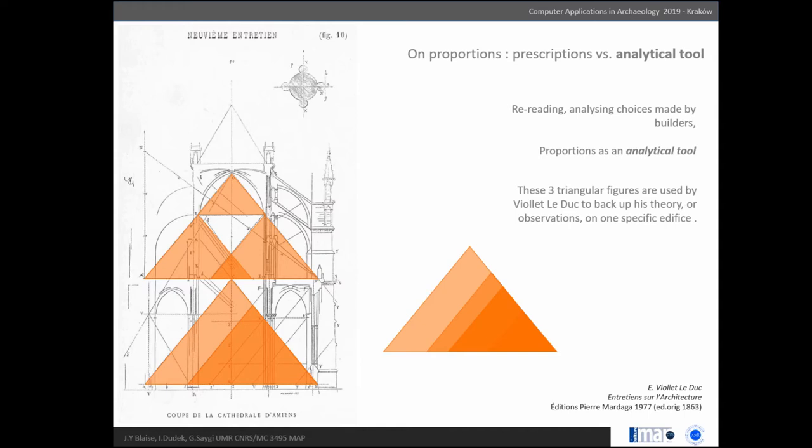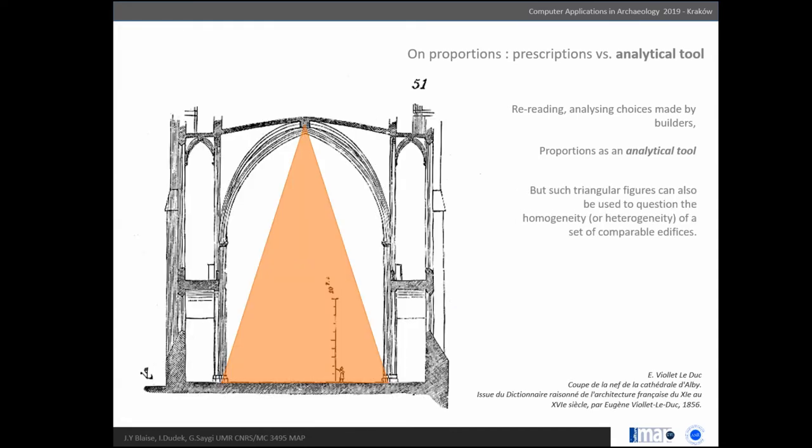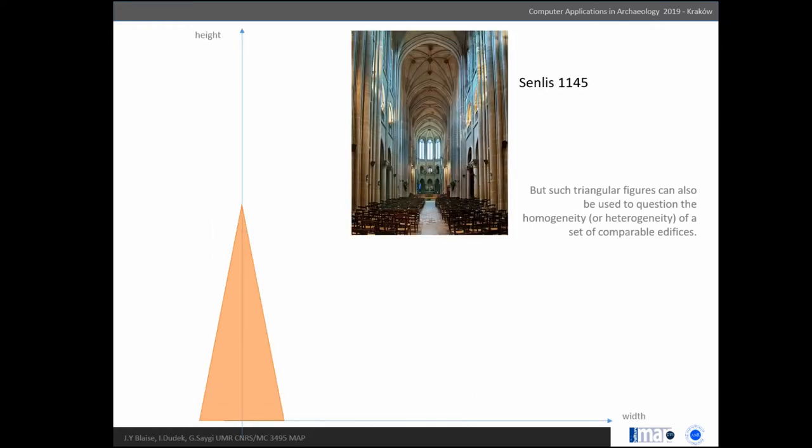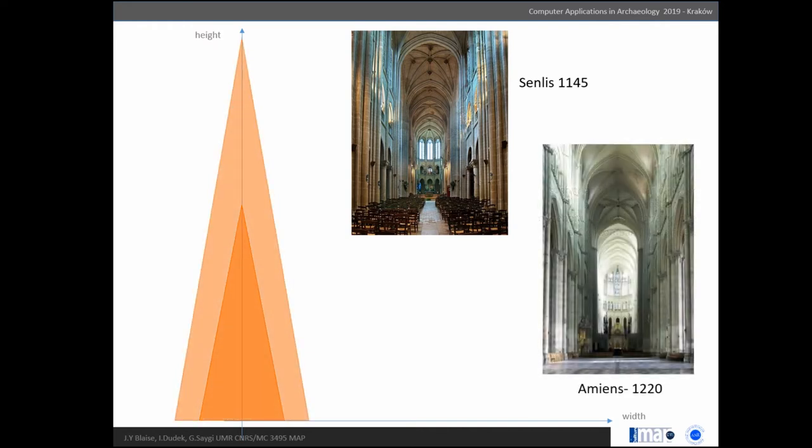Julius does it for one edifice, but you can use this same way of reasoning to compare edifices. Let's take this triangle and use it to observe how naves of Gothic cathedrals compare to one another. This is the figure we'll use. We know that in the Gothic period they tended to build bigger and bigger buildings year after year. This is 1145, and let's take a later one.